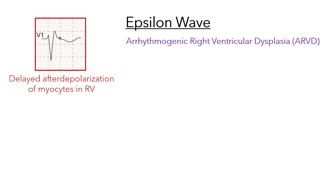This abnormal conduction is most prominent in the right ventricle, particularly around the outflow tract, producing a small blip seen during the ST segment of the ECG.